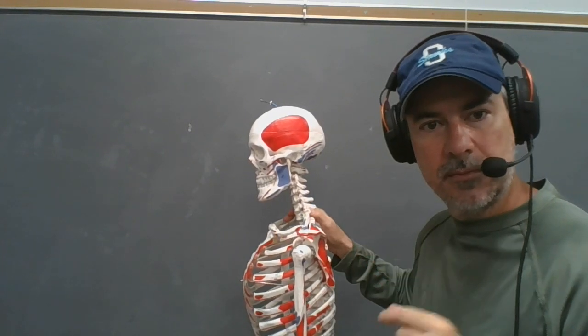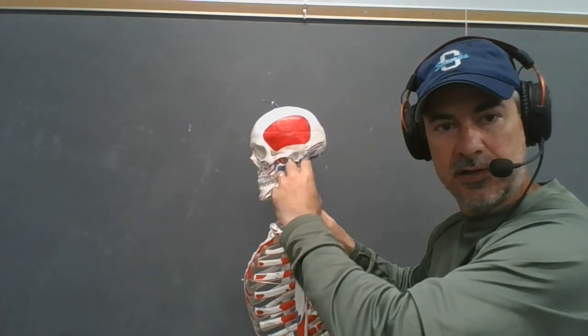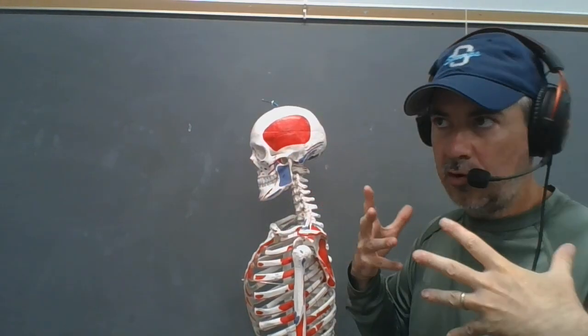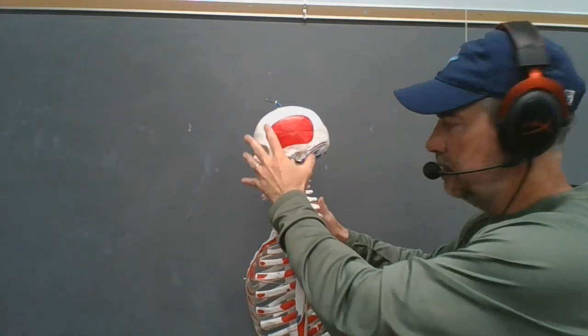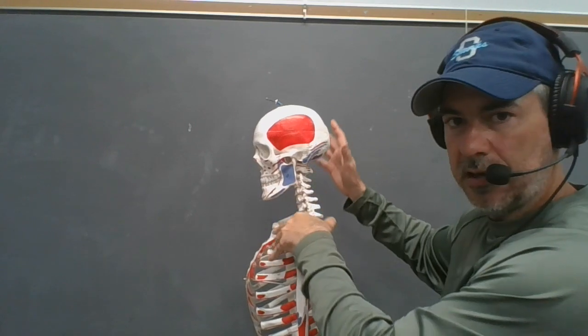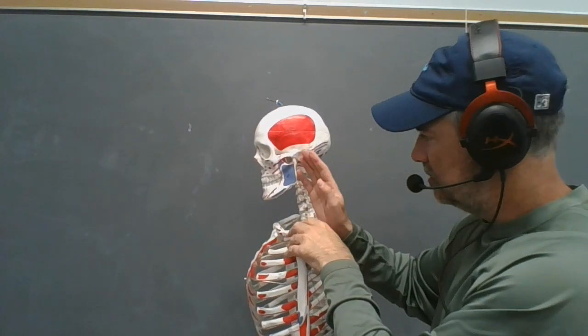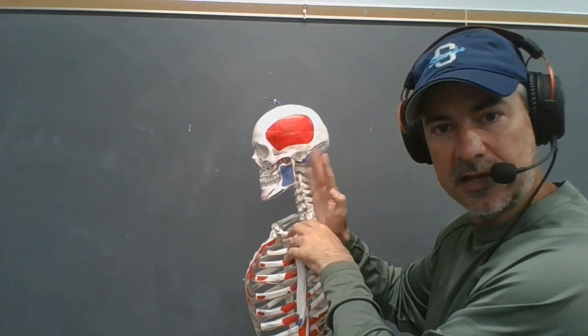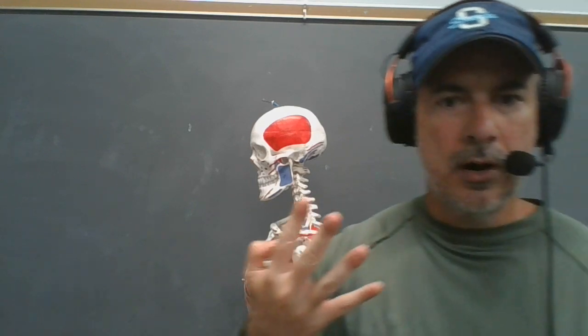Those bigger extrinsic muscles pull on several vertebrae by pulling on the skull. If I have muscles that pull on the skull in different directions, it's going to bend the whole slinky up here. Today's lecture is going to emphasize four major muscles that influence cervical motion that you are going to be accountable for.